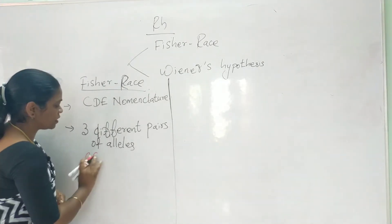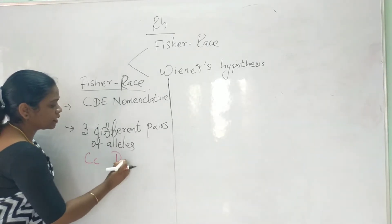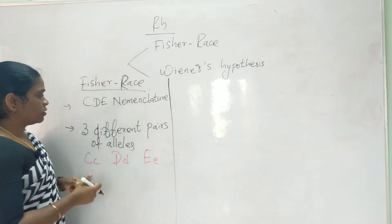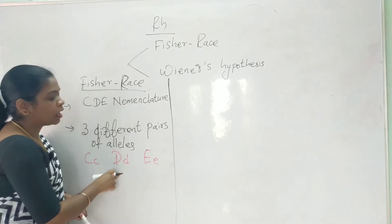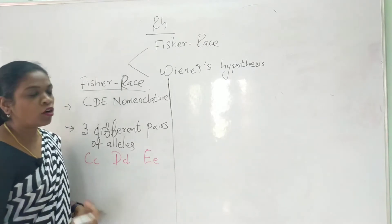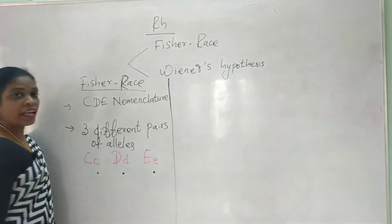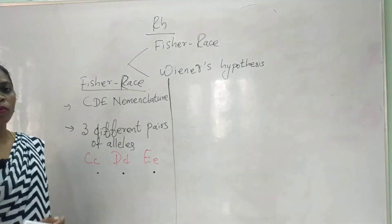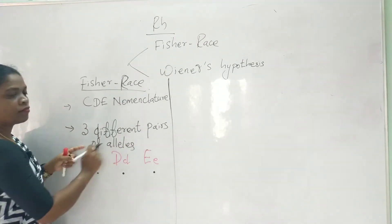The three pairs of alleles are: capital C and small c, capital D and small d, and capital E and small e. These three different pairs of alleles are present at three different loci. Loci are the locations where you can find genes — the places where genes are arranged in the chromosome.